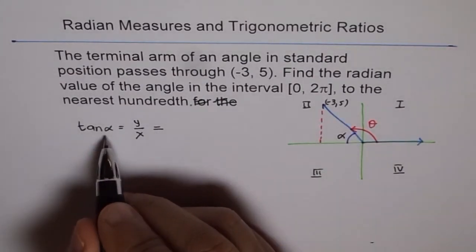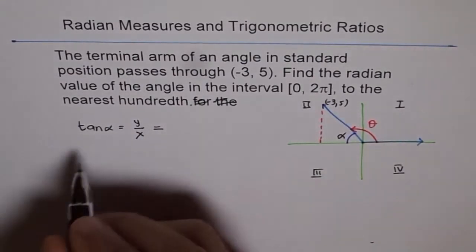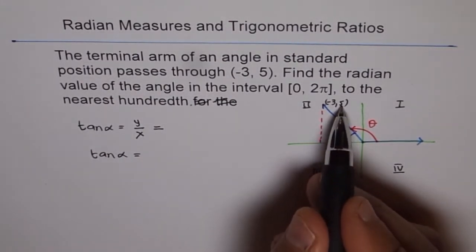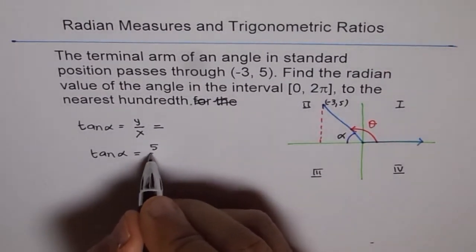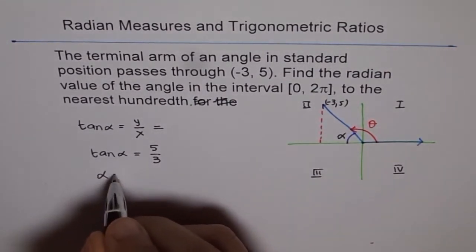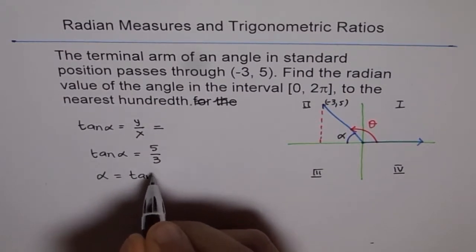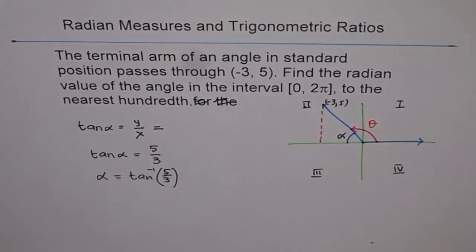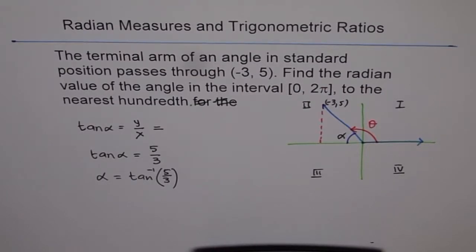We have tan alpha equals y over x, so tan alpha equals 5 over 3. Alpha will be tan inverse of 5 over 3. Use your calculator: second function, tan inverse within bracket, 5 divided by 3 equals 1.030. So alpha equals 1.0303.